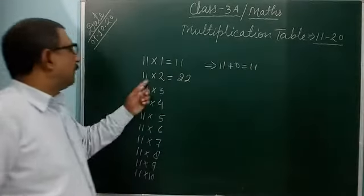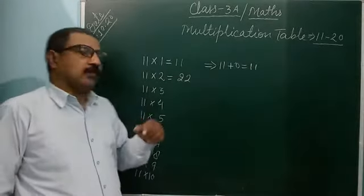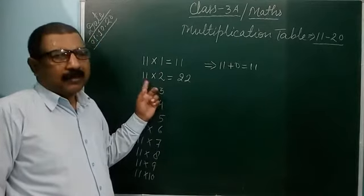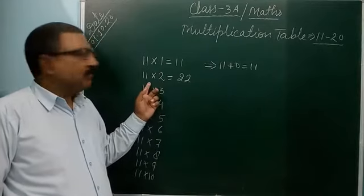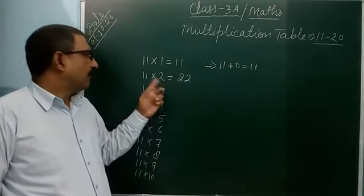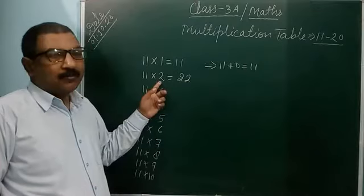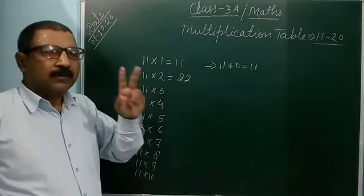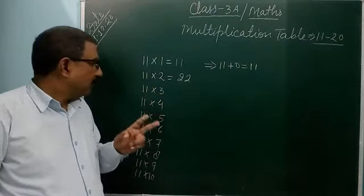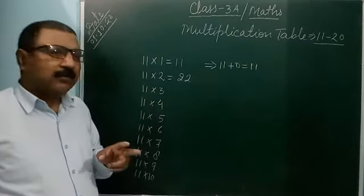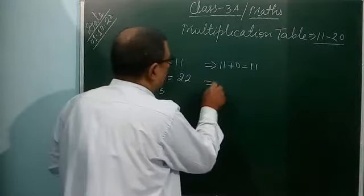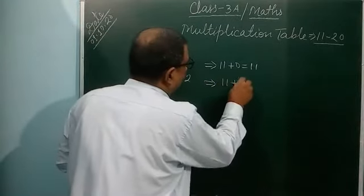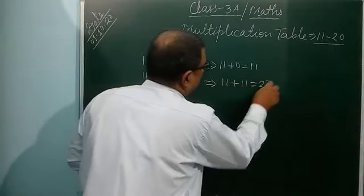After that, 11x2 is 22. 11 multiplied by 2 — it means 11 is added with 11 two times. How? It means 11 plus 11 is equal to 22.